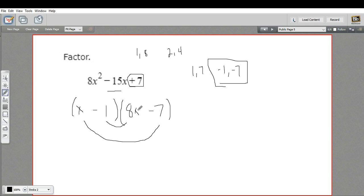If you want to convince yourself that these are indeed the factors, just go ahead and foil this out. You'll end up with 8x squared minus 15x plus 7. So that's a little bit of work with factoring a slightly more complicated quadratic expression.